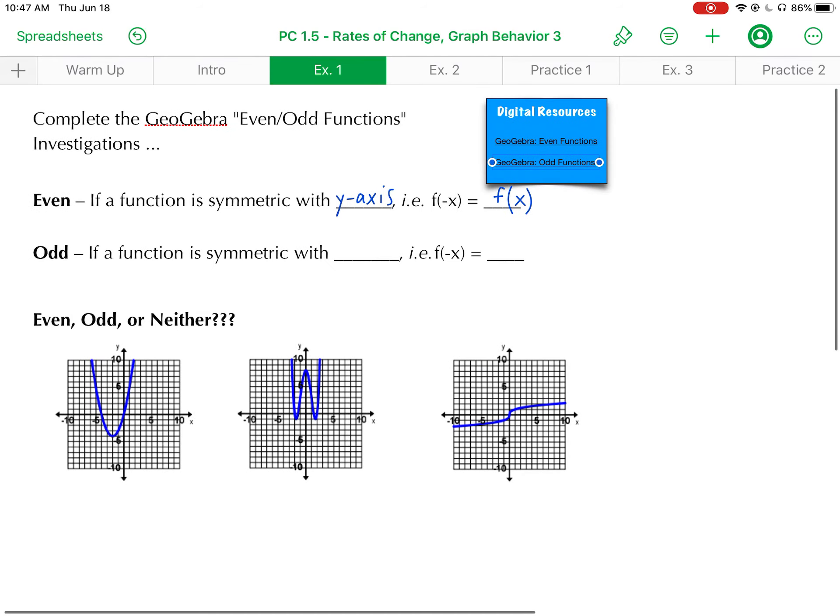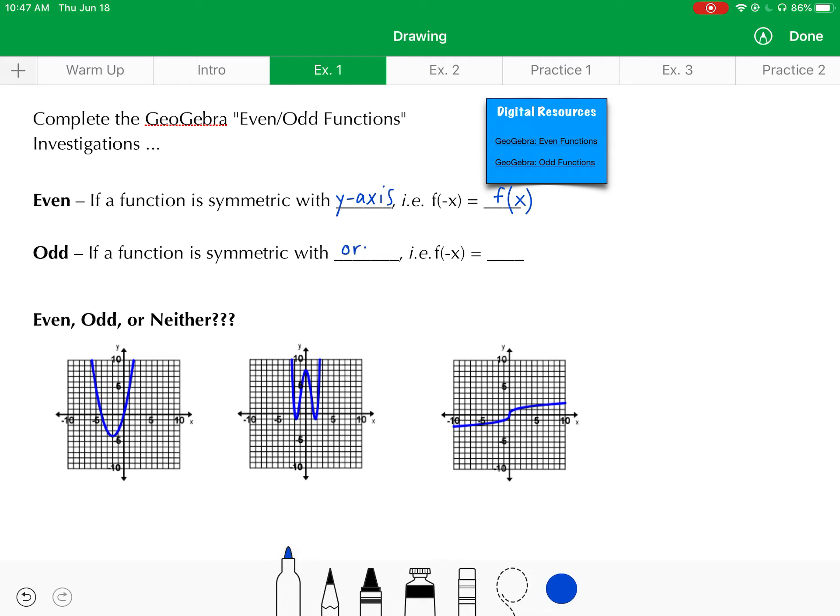Let's put that back to our notes. To be odd, we have to have symmetry with the origin. And this time, if I were to evaluate the function f with negative x, it's going to give me the negative of if I had evaluated with positive x.